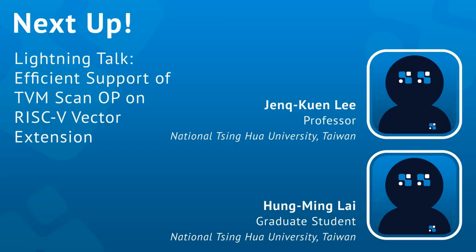Hong Ming is a graduate student at the Department of Computer Science at National Tsinghua University, Taiwan. His research interests are in compiler optimization on RISC-V processor with SIMD computation and AI compiler optimization. Professor Zhang Kuan Li is a professor at the same department and leads a research team developing AI compilers for RISC-V processors with SIMD computations. He has been a frequent presenter at TVM conference since its inception, giving a talk every year.